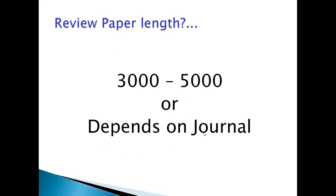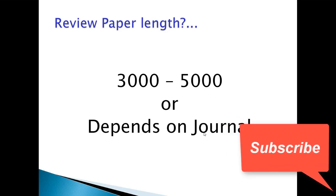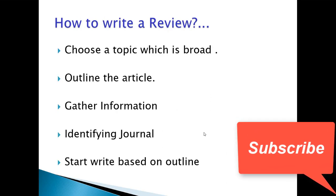Next, we will discuss the length of a review paper. It should be between 3000 to 5000 words, or it depends on the journal. Different journals have different review paper lengths.